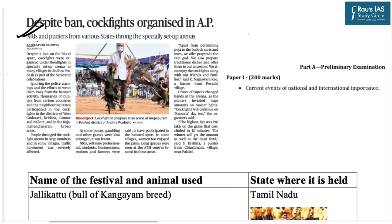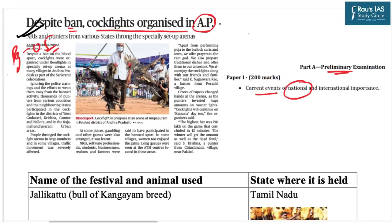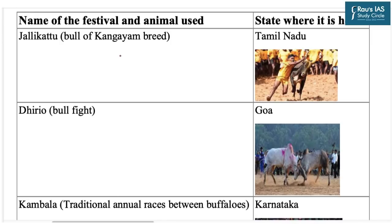The next topic, from page 5 of today's The Hindu, is relevant from the preliminary examination's perspective under current events of national importance. Despite bans, cockfights were organized in Andhra Pradesh — thousands of punters from various countries and neighboring states participated in cockfights in the districts of West Godavari, Krishna, Guntur, and Nellore, and in Rajahmundry urban areas. From the exam's perspective, we need to be aware of various festivals celebrated across different states with different names and animals.